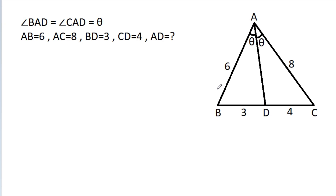In this video, we have been given that angle BAD is equal to angle CAD, that is theta. AB is 6, AC is 8, BD is 3, and CD is 4. Then we have to find AD.